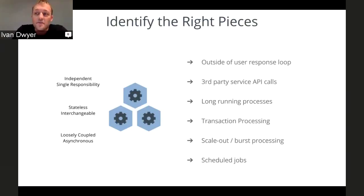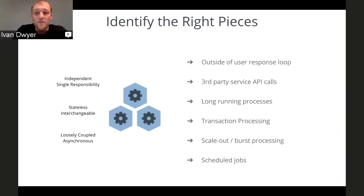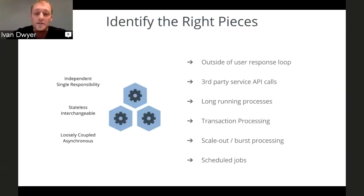From a functionality perspective, it's the processes that fall outside of the user response loop. That could be calls to third-party services, things that are very long-running, encoding tasks, billing processes, anything that needs to scale out rapidly — running a million times randomly. Scheduled tasks like cron jobs are basically just tasks that happen asynchronously. When we talk to our customers, we do reviews of their applications and identify the right pieces within a task-centric model versus an app-centric model.